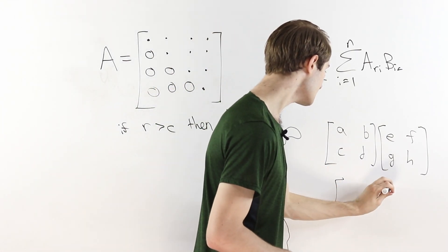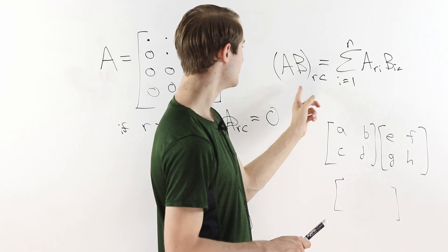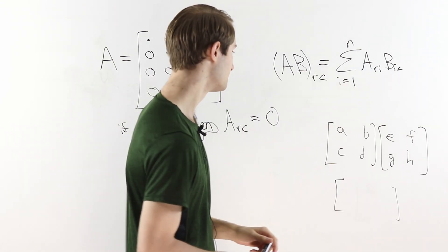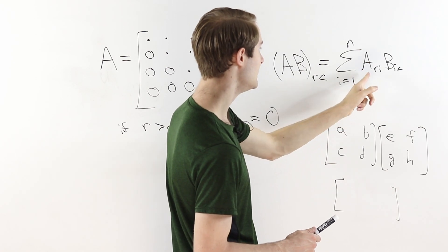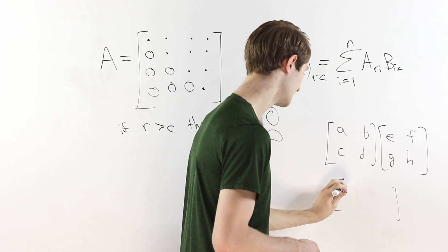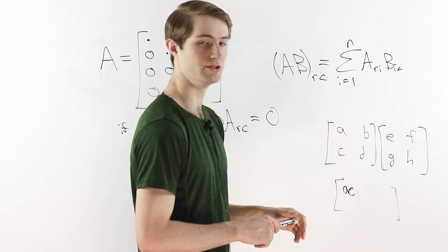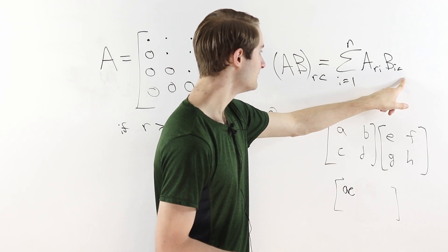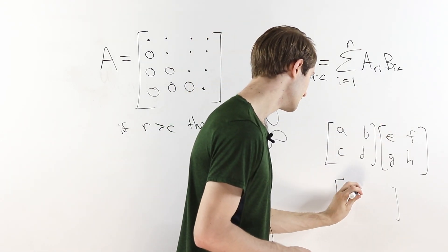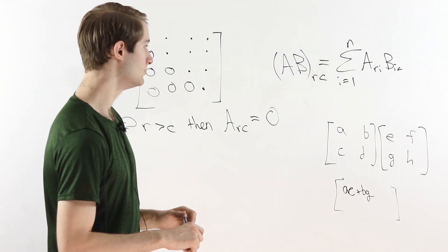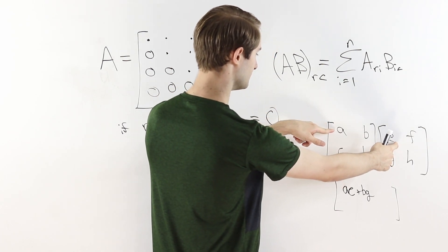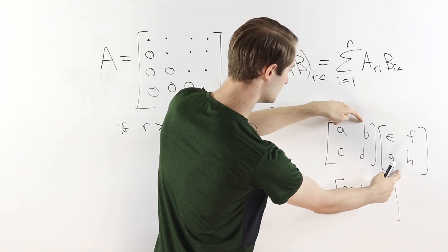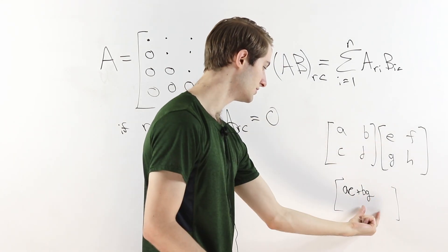For example, to find the top-left entry of the product, we look at row 1 and column 1. Starting with I equals 1, we get A_(1,1) times B_(1,1), which is the product of the two top-left entries. Then with I equals 2, we get A_(1,2) times B_(2,1). So the top-left entry of the product is A_(1,1)·B_(1,1) plus A_(1,2)·B_(2,1) — matching the pattern of marching right across the first matrix and downward along the second.